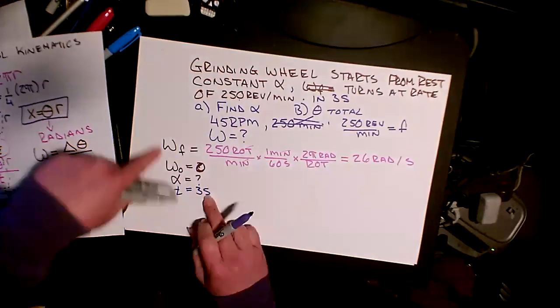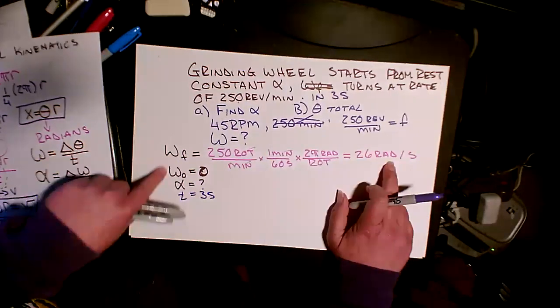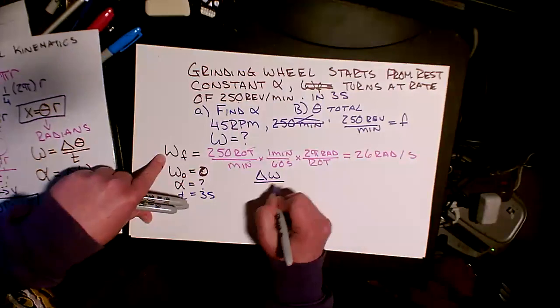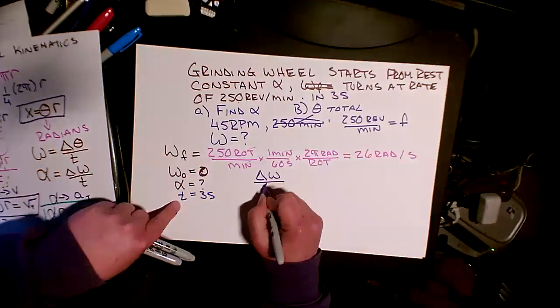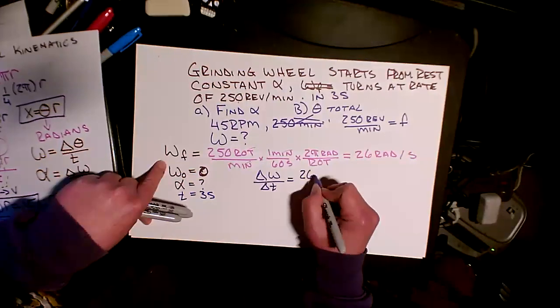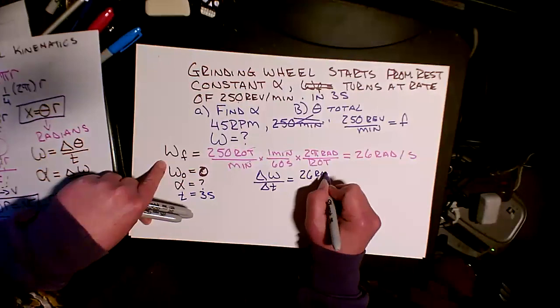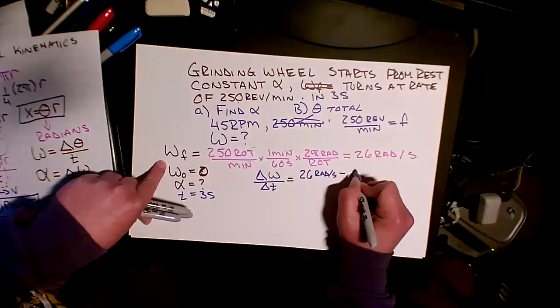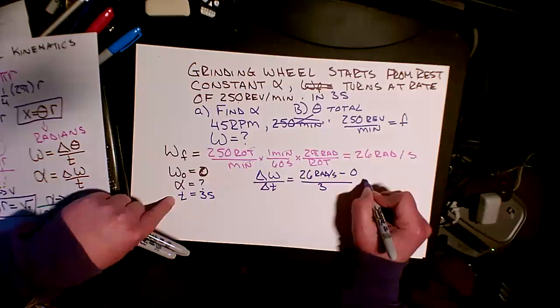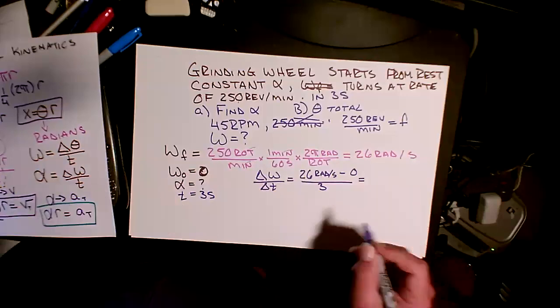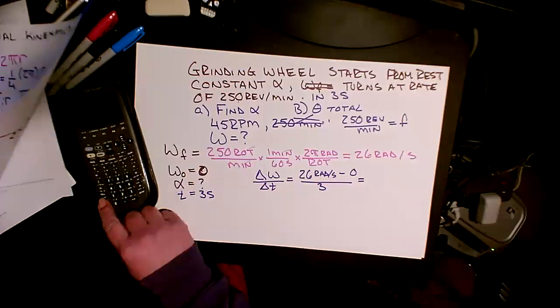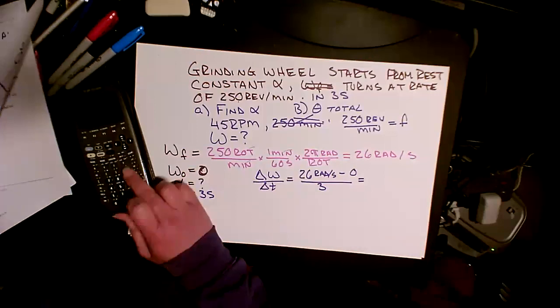So let's see, I have a change in omega. So I have a d omega dt, which is going to be my 26 is my final, 26 radians per second, minus zero for my initial, final minus initial, divided by my total time is three. And that's near nine, like eight point something or rather, maybe a little more exact than that. So 26 divided by three.